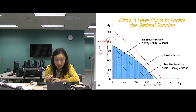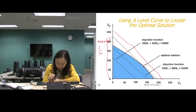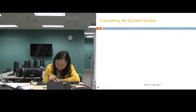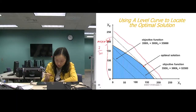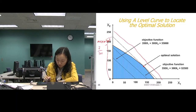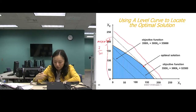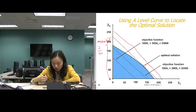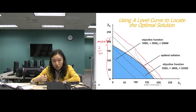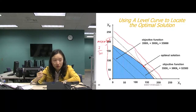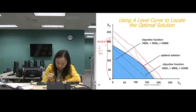At the optimal point, we find that the solution lies where two constraint lines intersect — in this case, the pump constraint line and the labor constraint line. To calculate the exact values, we solve the two equations simultaneously: X1 + X2 = 200 and 9X1 + 6X2 = 1,566.